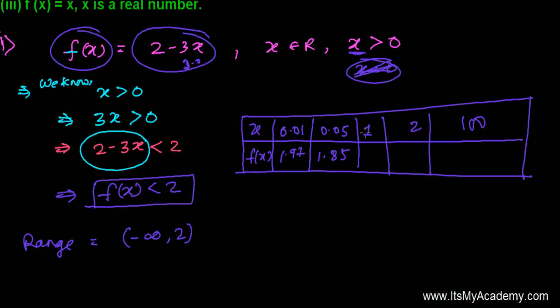And again, 2 minus, when I'll put 1, that's very simple, you can find out that's minus 1. And when I'll put 2 here, so 3 times 2, that will be 6. So I'll get here minus 4. And when x will be 100, this will be 300. And 2 minus 300, that will be minus 298.